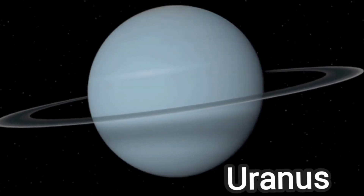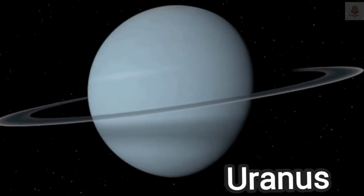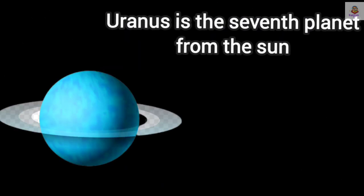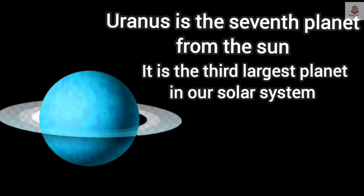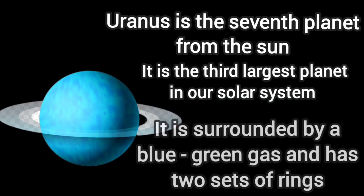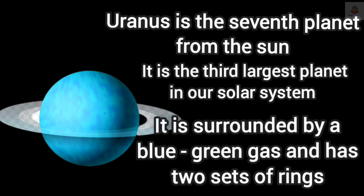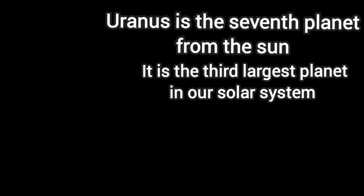Uranus. Uranus is the seventh planet from the sun. It is the third largest planet in our solar system. It is surrounded by a blue-green gas and has two sets of rings.